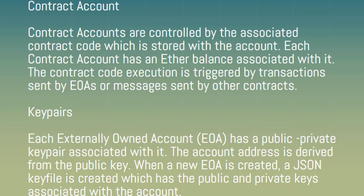Contract accounts are controlled by the associated contract code, which is stored within the account. Each contract account has an Ether balance associated with it. Contract code execution is triggered by transactions sent by EOAs or messages sent by other contracts.